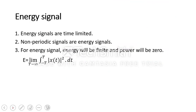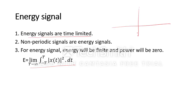Energy signals are time-limited, non-periodic signals. For an energy signal, energy will be finite and power will be zero. The formula for energy is: E = limit T→∞ of the integral from -T to T of |x(t)|² dt. If a signal exists only for a limited duration, it is an energy signal.